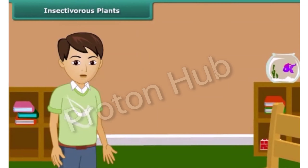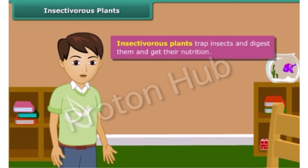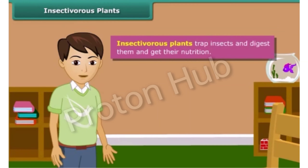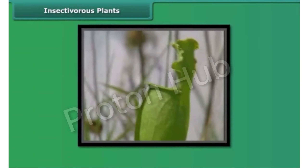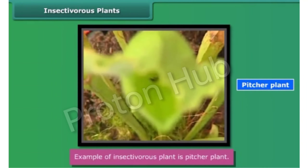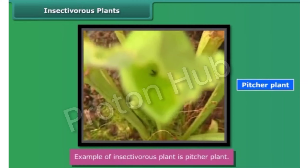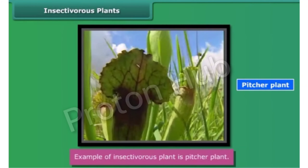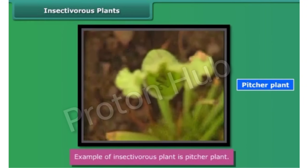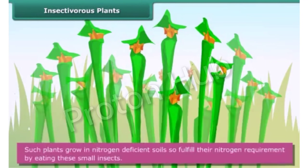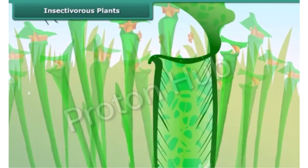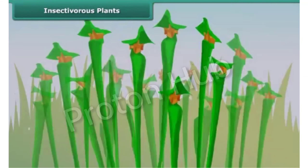The next category is insectivorous plants. There are a few plants which can trap insects, digest them, and get nutrition — for example, pitcher plants. These plants can synthesize their own food by photosynthesis, but they grow in nitrogen-deficient soils, so they fulfill their nitrogen requirement by eating small insects, and hence are called insectivorous plants.